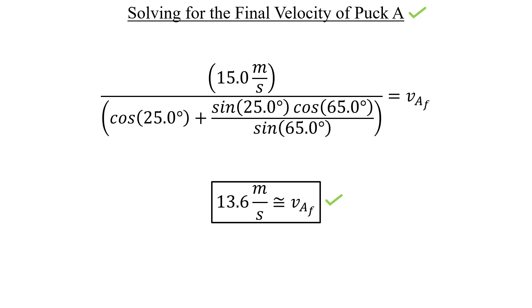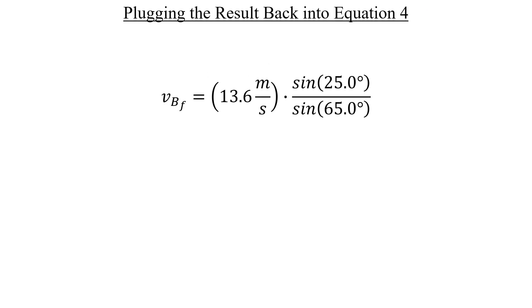We're going to take this and plug it back in to equation number four to get the final speed of puck B, which comes out to be 6.34 meters per second. Now we know the direction of puck B's velocity, along with the final velocities of both. I hope this helped. Thanks for watching, everyone. Have a great weekend.